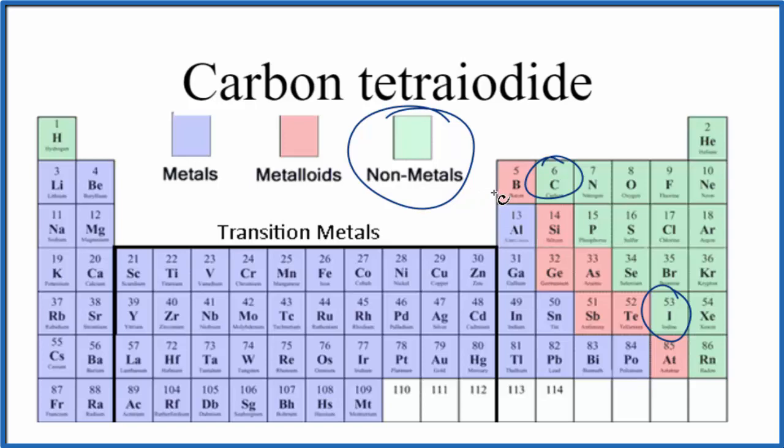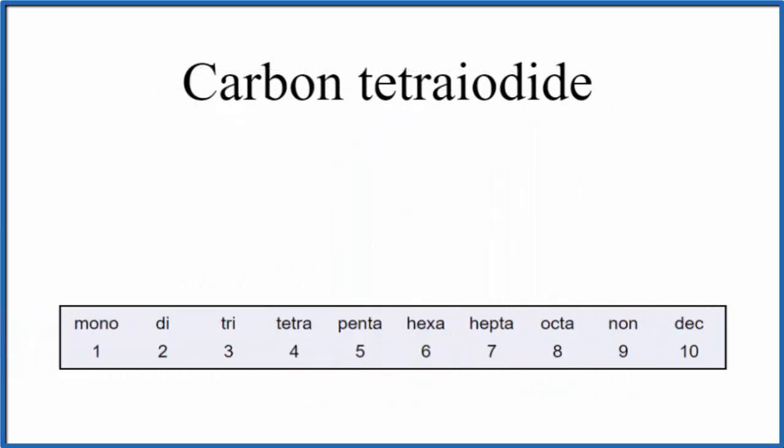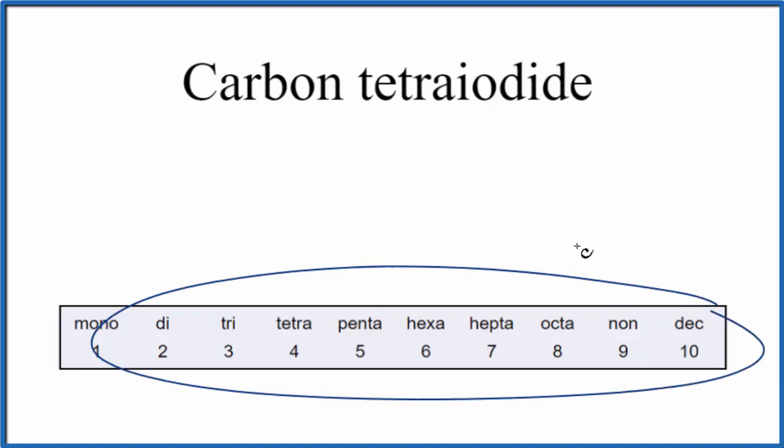When we have two nonmetals, that's called a molecular or a covalent compound. With the molecular compound, we don't need to think about ionic charge, but we do have to think about using these prefixes here to name the compound.